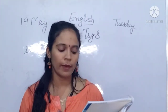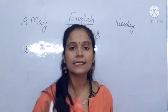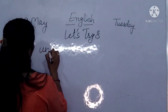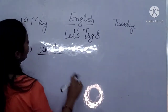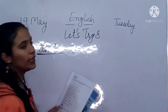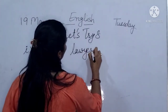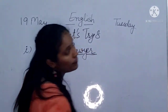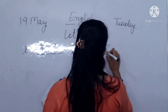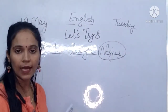Sentence I: my uncle works as a lawyer in Nagpur. Uncle is a common noun — underline it. Lawyer is also a common naming word — underline it. And Nagpur is the name of a city, a place — so circle Nagpur.